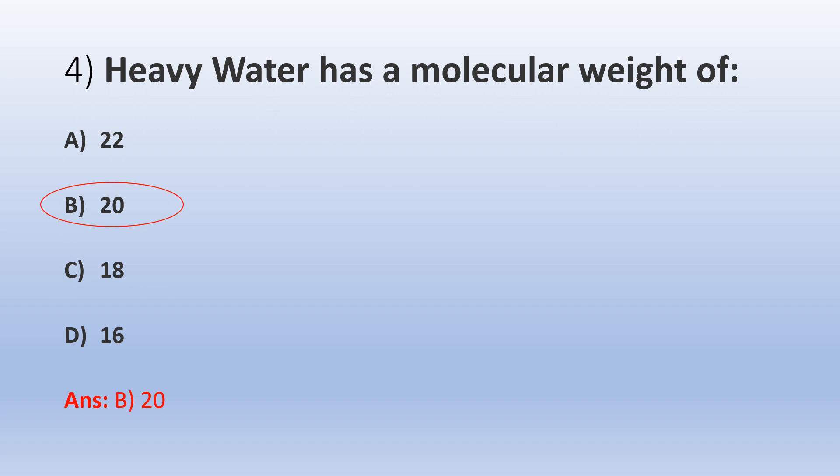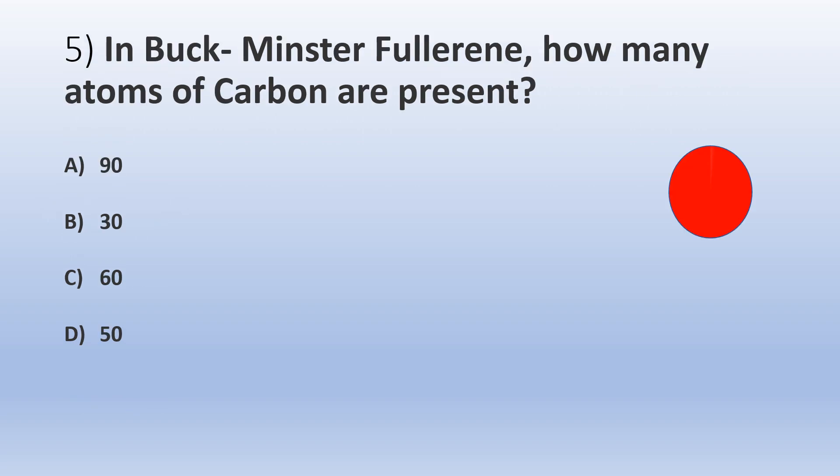We'll move on to the next question. Question number five: In Buckminster Fullerene, how many atoms of carbon are present? A) 90, B) 30, C) 60, and D) 50.